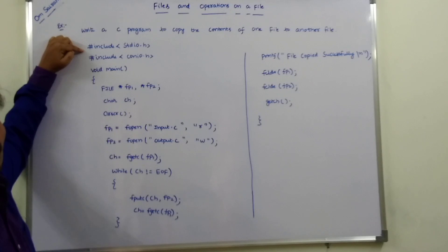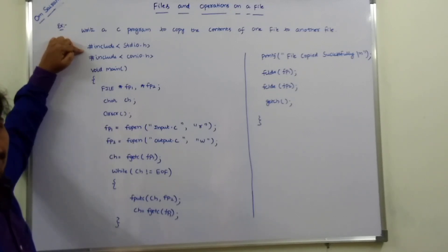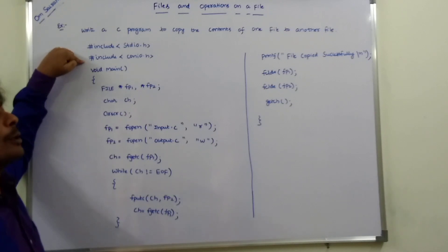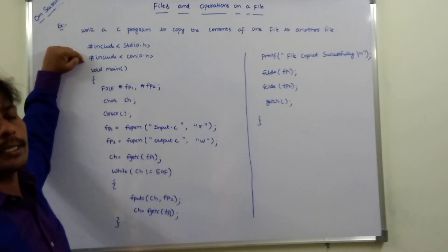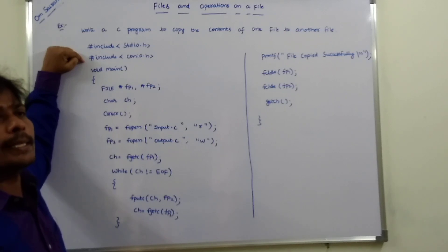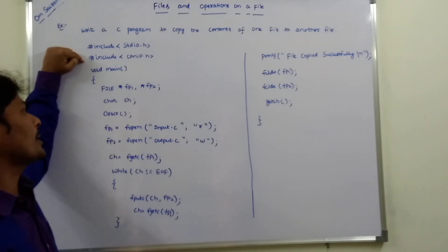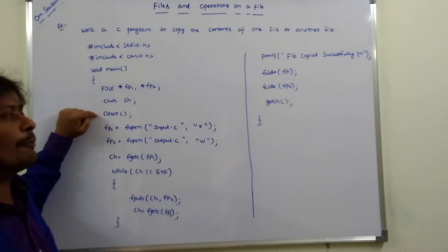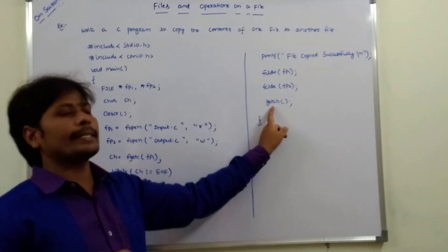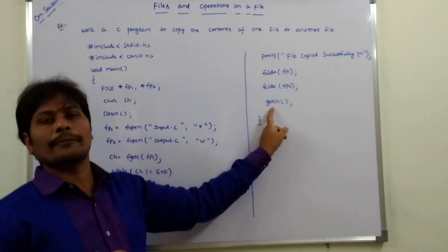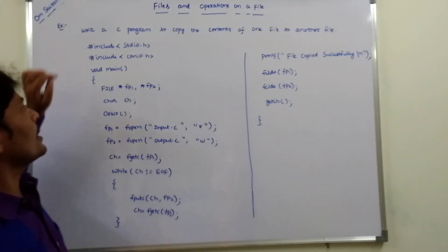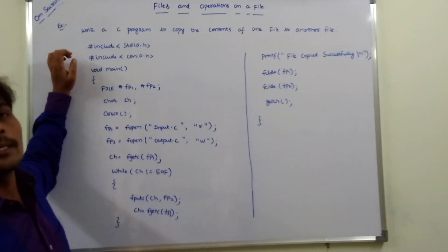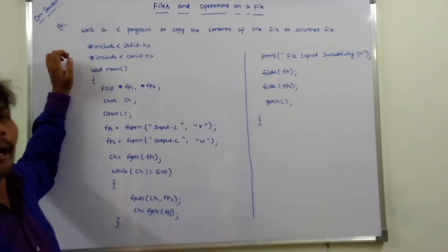This header file stdio.h contains the code of printf and scanf functions. Next, hash include conio.h, that is the console input output header file. This header file contains two functions: clrscr function, which is the clear screen function, and getch function, the get character function. These two functions are included in the conio.h header file.